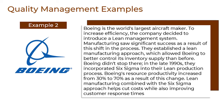The second example is Boeing, the world's largest aircraft maker. To increase efficiency, the company decided to introduce a lean management system. Manufacturing saw significant success as a result of this shift in the process. They established a lean manufacturing approach, which allowed Boeing to better control its inventory supply than before. In the late 1990s, they incorporated Six Sigma into their lean production process. Boeing's resource productivity increased from 30% to 70% as a result of this change. Lean manufacturing combined with the Six Sigma approach helps cut costs while also improving customer response times.